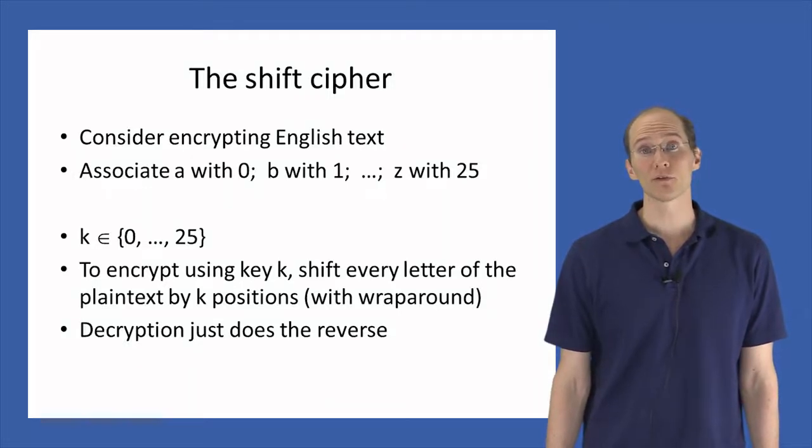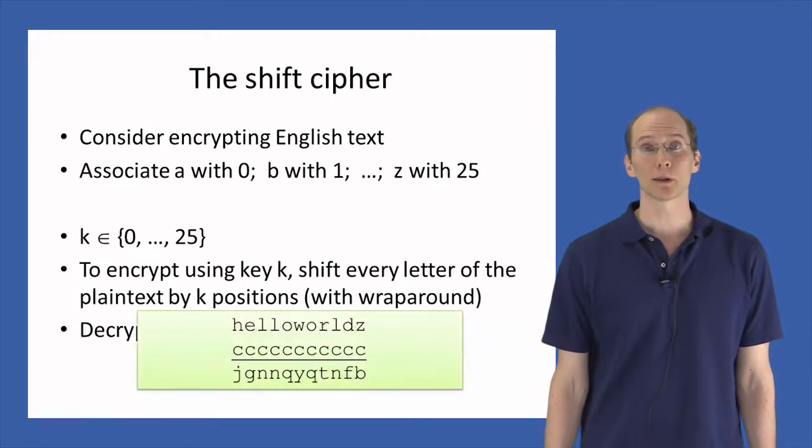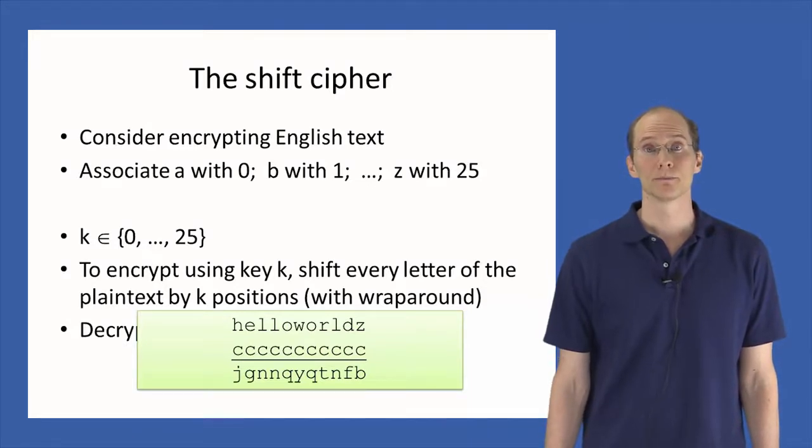So, for example, if we encrypt the plaintext Hello World using the key C, which corresponds to 2, then we simply shift each letter of the plaintext forward by 2 positions. For example, H becomes J, etc. Decryption will simply reverse the process by shifting backward.